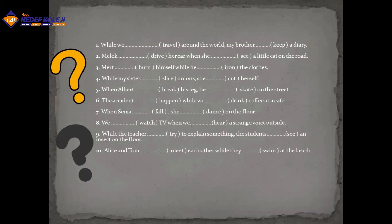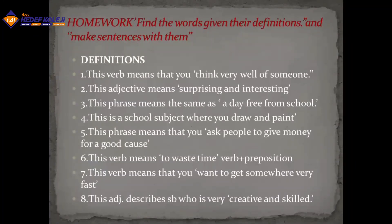'When we were drinking coffee at a cafe, Sema fell — she was dancing on the floor.' 'We were watching TV when we heard a strange voice outside.' — 'heard' is past of 'hear', add '-d' because it's regular... actually 'heard' is irregular. 'While the teacher was trying to explain something, the students saw an insect on the floor.' — 'saw' is the past of 'see', written S-A-W. 'Alice and Tom met each other while they were swimming at the beach.'